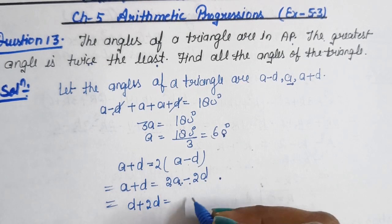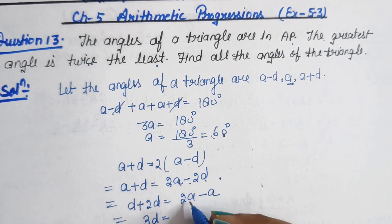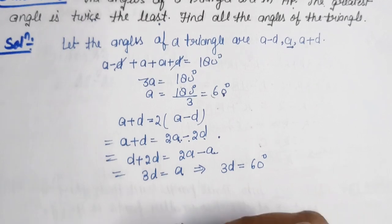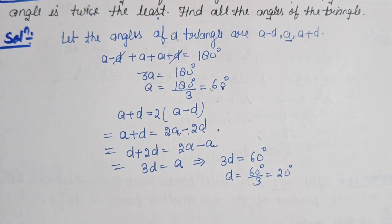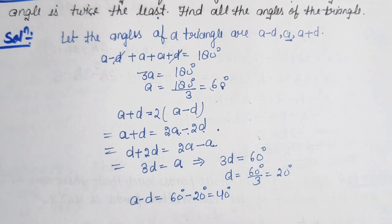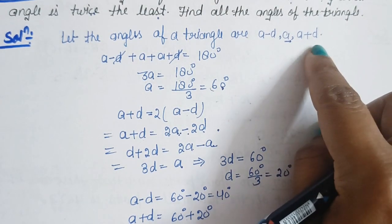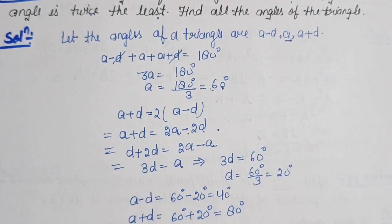Rearranging: A + D = 2A − 2D gives 3D = A. Substituting A = 60°, we get 3D = 60°, so D = 20°. Therefore, the angles are: A − D = 60° − 20° = 40°, A = 60°, and A + D = 60° + 20° = 80°. The greatest angle is 80°.